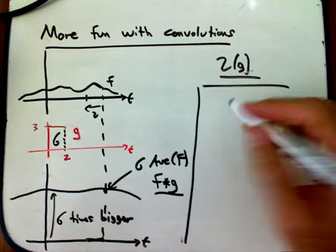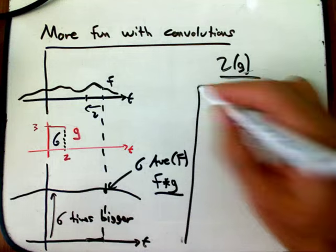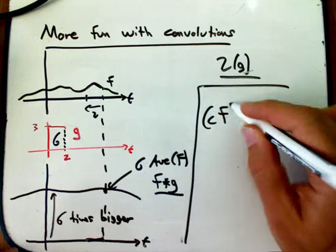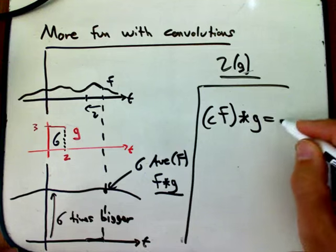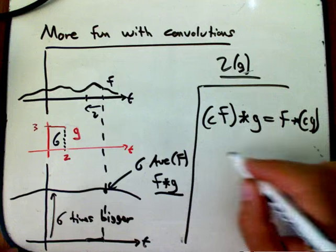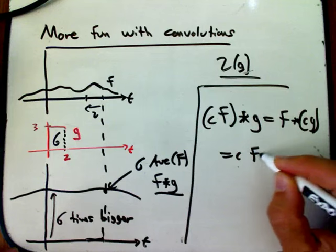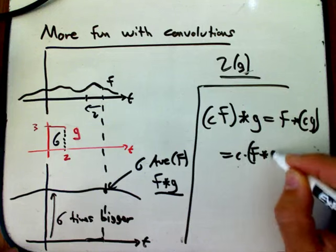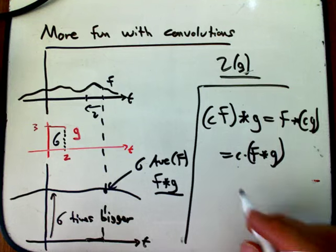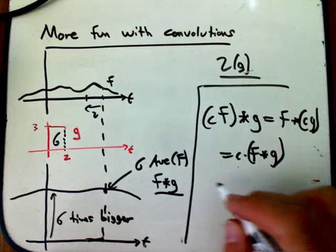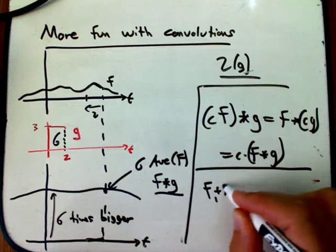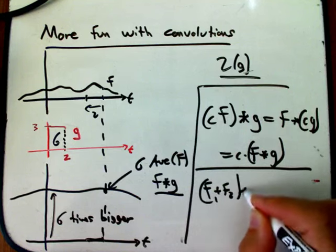Let me mention things I didn't have people prove in the worksheet, because they're super easy, but really part of a theme that is really important. You can scale either function by a constant. If you double f or double g, you double the convolution. It's trivial from properties of integrals.